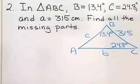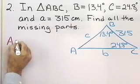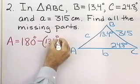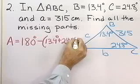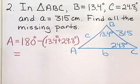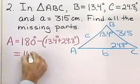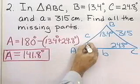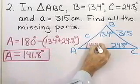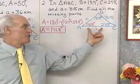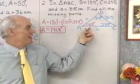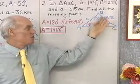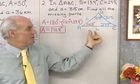I'm going to start by finding angle A. Angle A will be 180 degrees minus 13.4 degrees plus 24.8 degrees. I do that on my calculator and angle A comes out to be 141.8 degrees. I'll fill in my triangle with 141.8 degrees. You can see right away that I haven't drawn a very accurate triangle, because this is an obtuse angle of 141.8 degrees, and the triangle certainly doesn't look like that — but that's okay for our purposes. We're using this triangle just to see what's given and what we're asked to find.